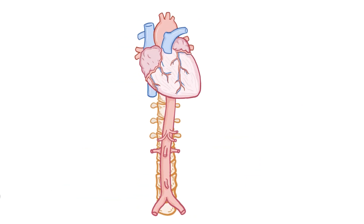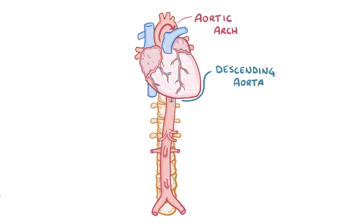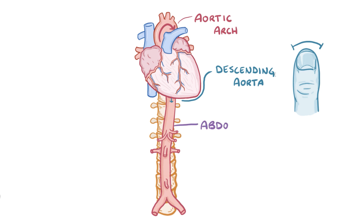Normally, blood heading toward the lower parts of the body exits the heart, swoops through the aortic arch, and then flows downward through the descending aorta, which is a large muscular blood vessel about as wide as a thumb. The descending aorta runs along the back of the abdominal wall in front of the spine, and that part is called the abdominal aorta.